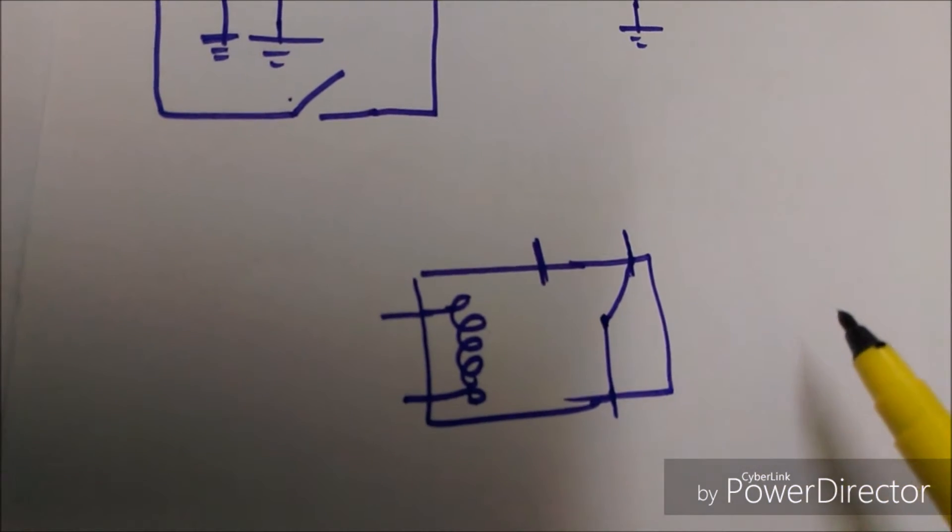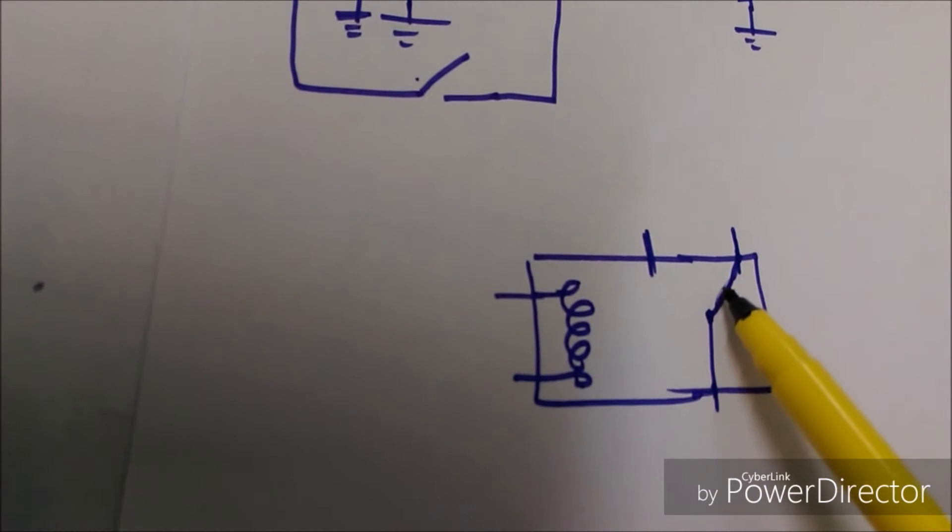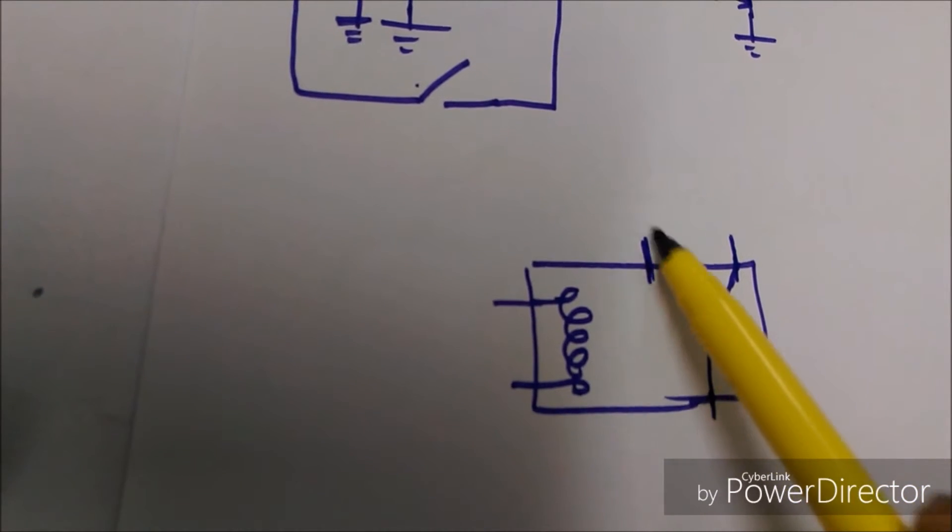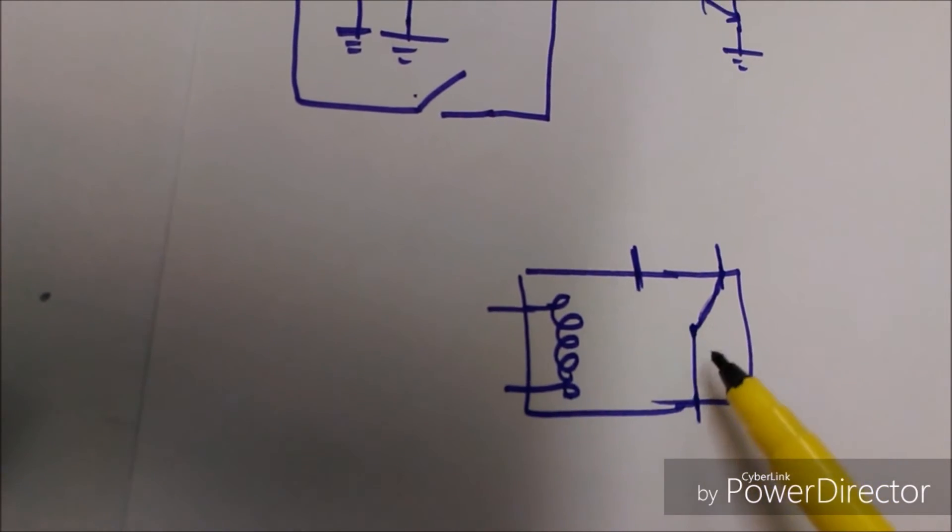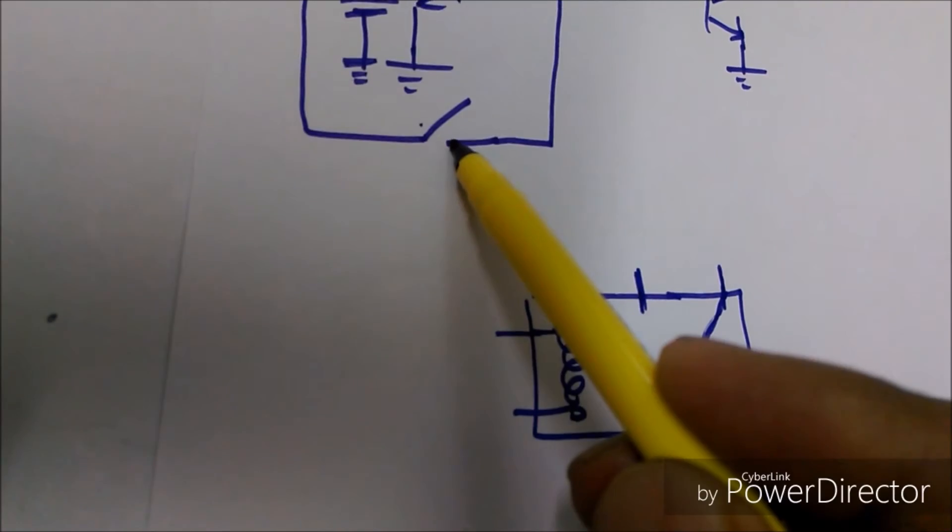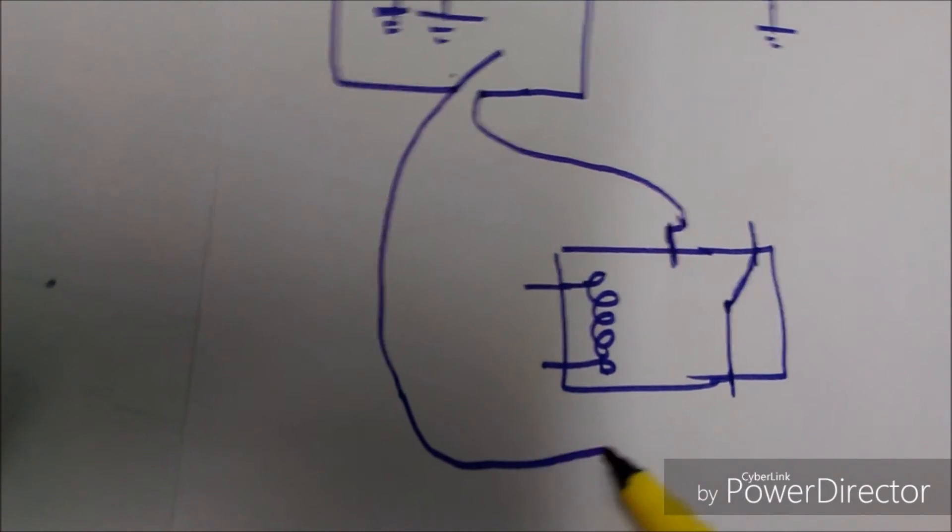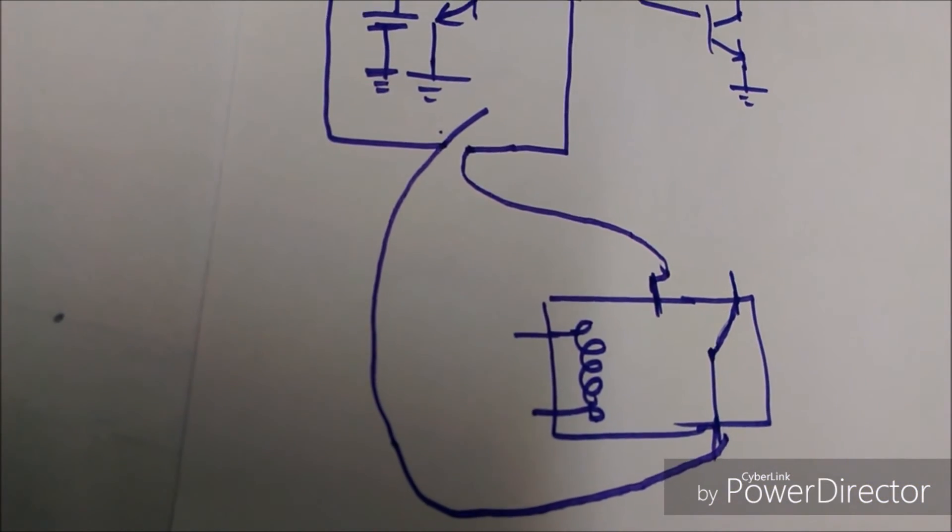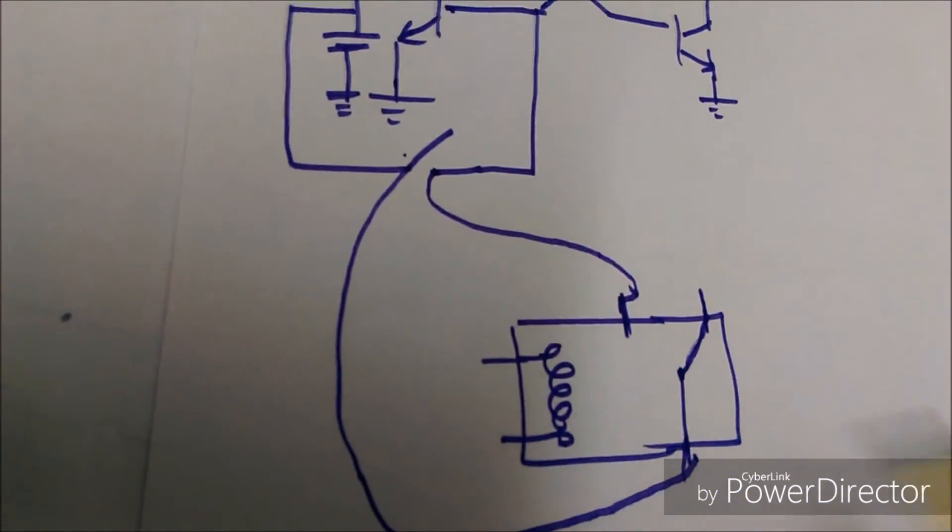Relay is a kind of switch that is controlled by voltage or any input. When we apply input, it generates a magnetic field and this clip is attracted to this pin, and this would be short circuited or it will be joined. So it can be used as a switch. We can connect this here, this pin and this one is here, so it becomes an electronically controlled switch.